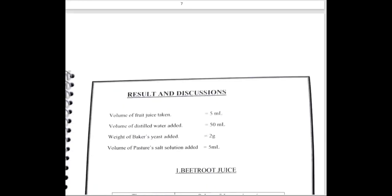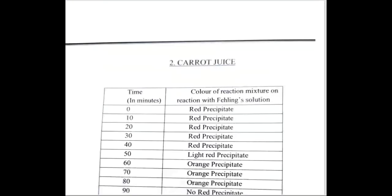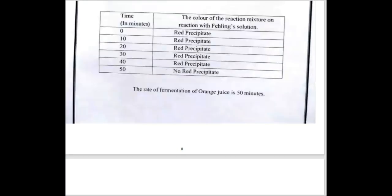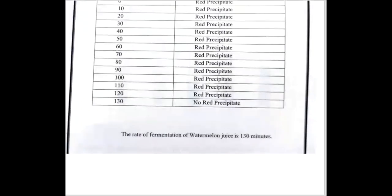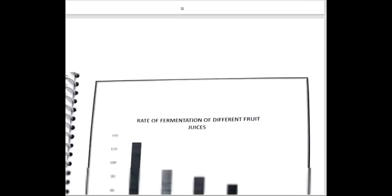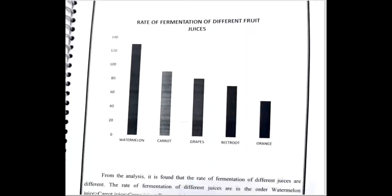Then result and discussion. We are taking beetroot juice, carrot juice, grapes, orange juice, and watermelon juice. The rate of fermentation is calculated from 0 to 130 minutes, and then the graph is drawn.